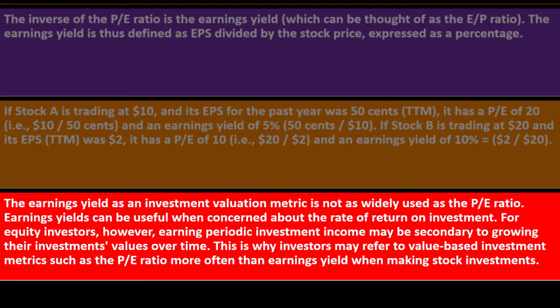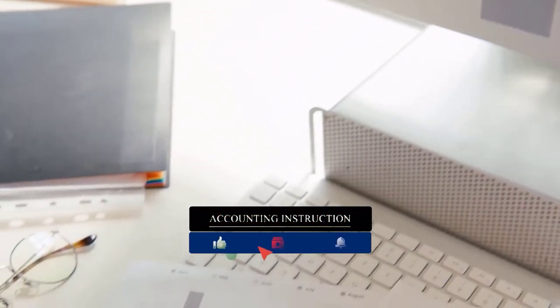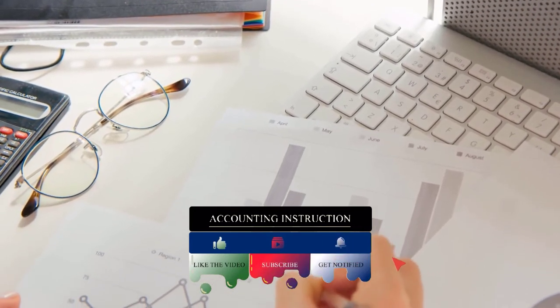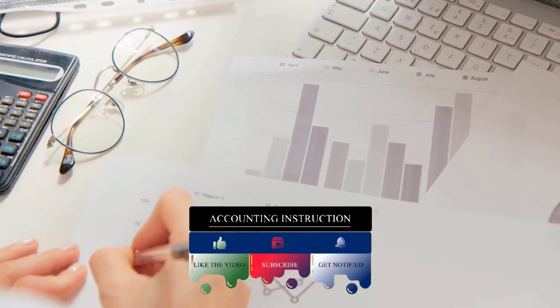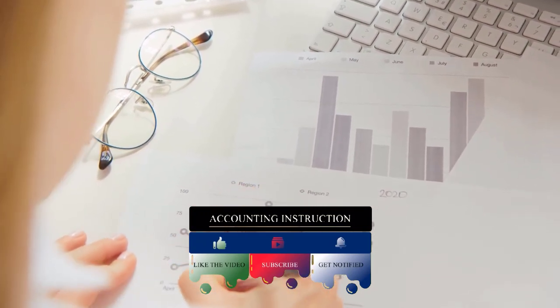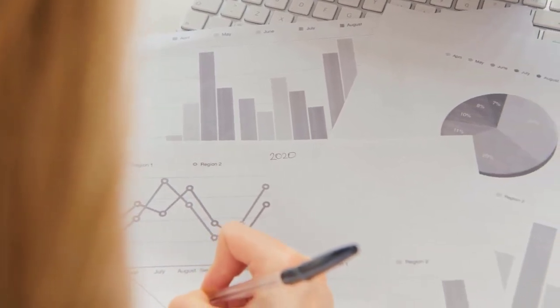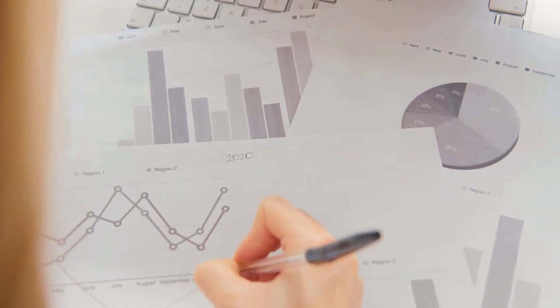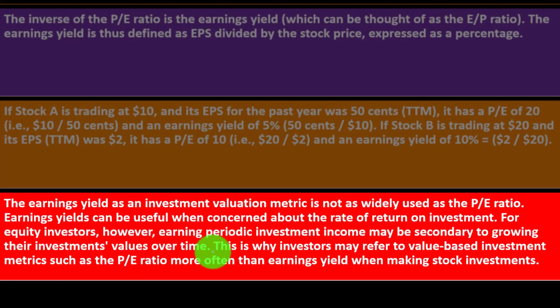If Stock B is trading at $20 and its EPS is $2.00, it has a PE of 10 (20 divided by 2) and an earnings yield of 10% (2 divided by 20). The earnings yield as an investment valuation metric is not as widely used as the PE ratio. Earnings yield can be useful when concerned about the rate of return on investment, but for equity investors, periodic investment income may be secondary to growing investment values over time.